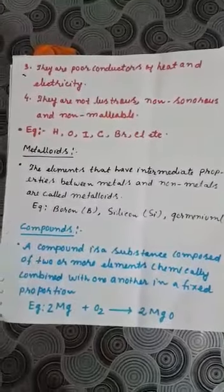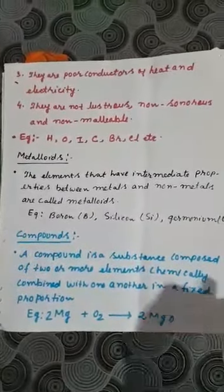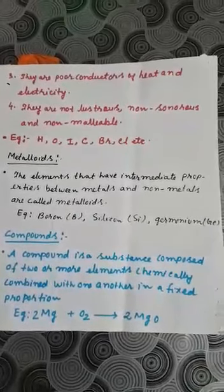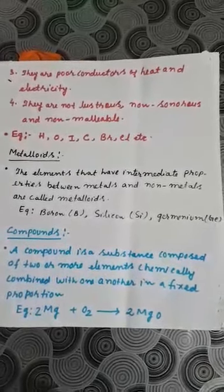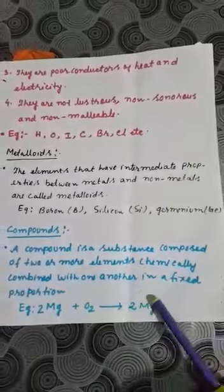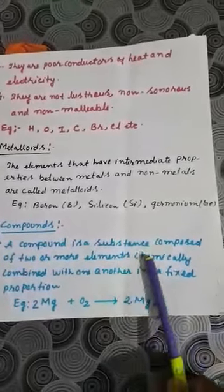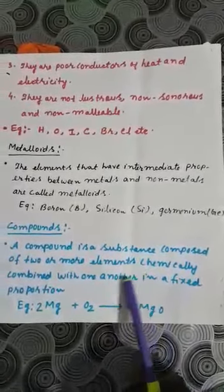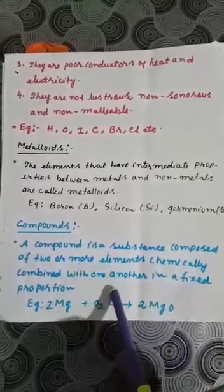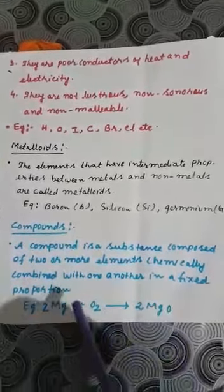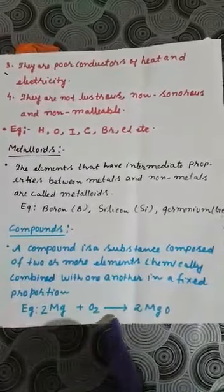What is a compound? A compound is a substance composed of two or more elements chemically combined with one another in a fixed proportion. There will be chemical reactions between two or more elements and they chemically combine — this type of substance is called a compound. For example, magnesium in the presence of oxygen gives us magnesium oxide.